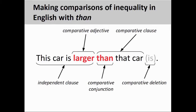The comparative clause, a type of subordinate adverbial clause, follows the independent clause and begins with the comparative conjunction 'than'. The subordinate clause is so named as it, unlike an independent clause, cannot stand on its own — the sentence 'than that car' has a sense of incompleteness about it. Finally, we can omit the verb from the comparative clause as its sense is carried over from the independent clause. Removing redundant elements from the comparative clause is known as comparative deletion.